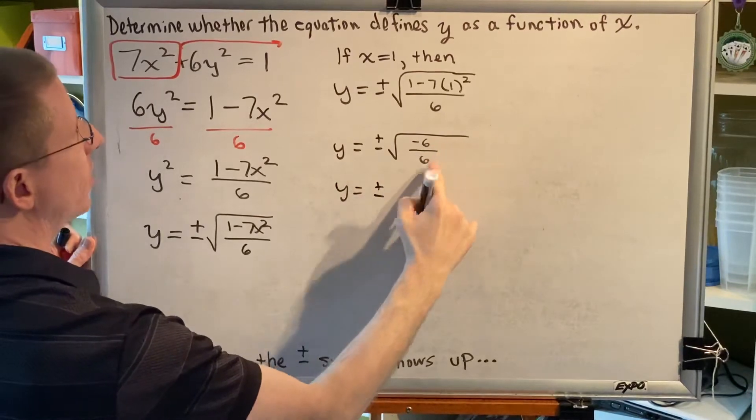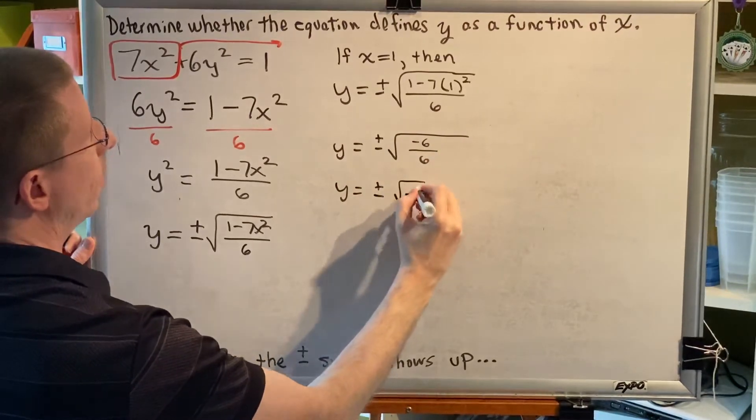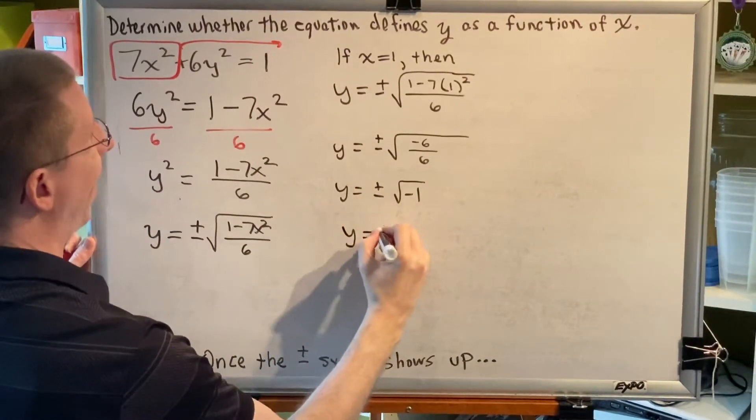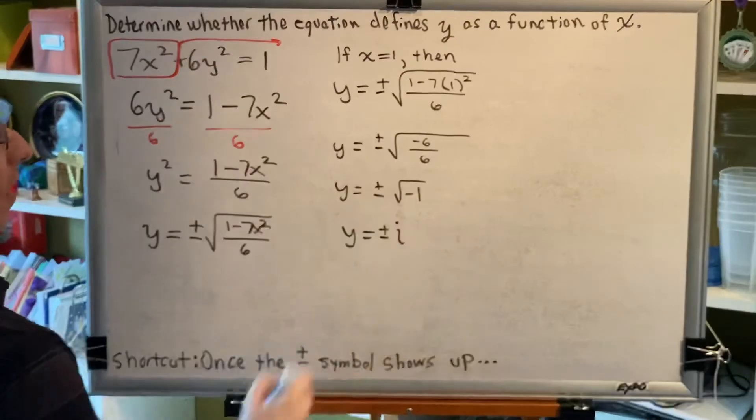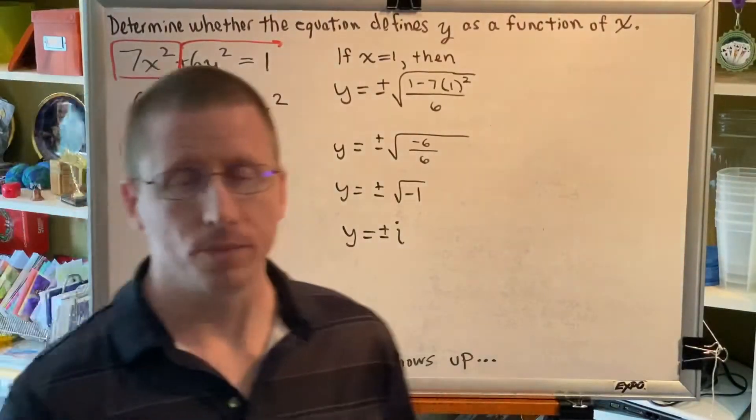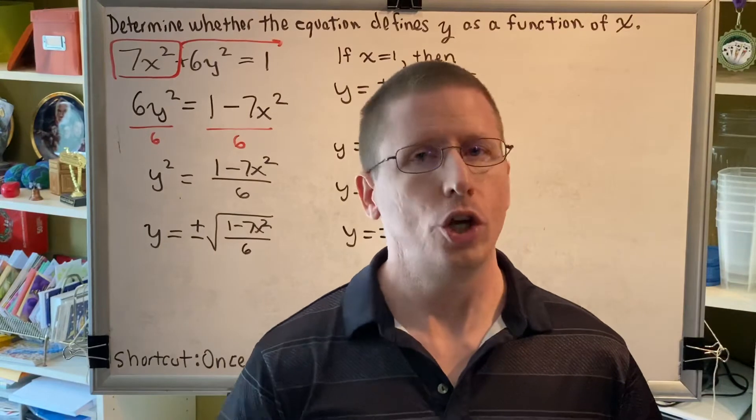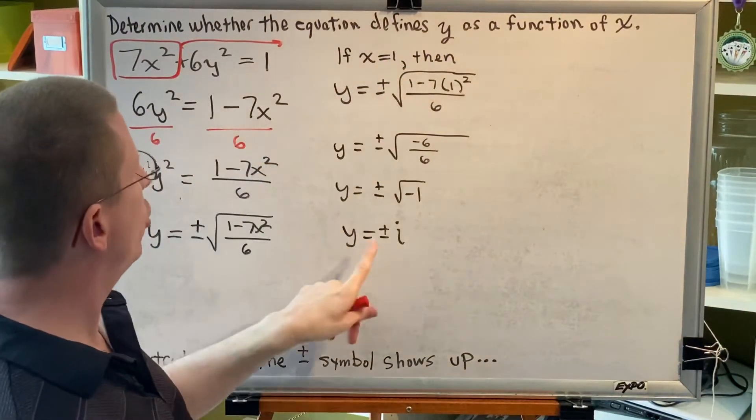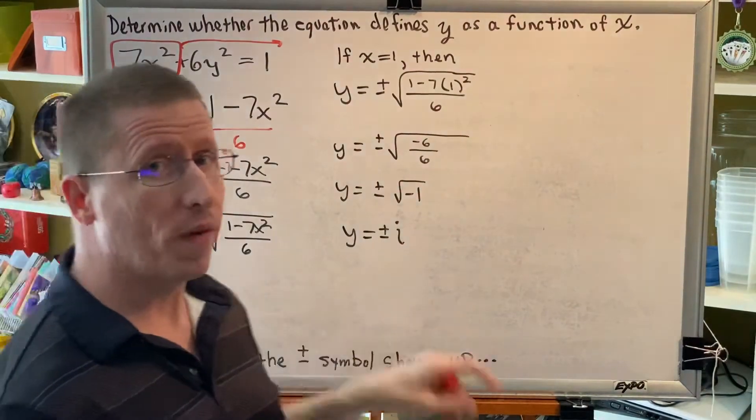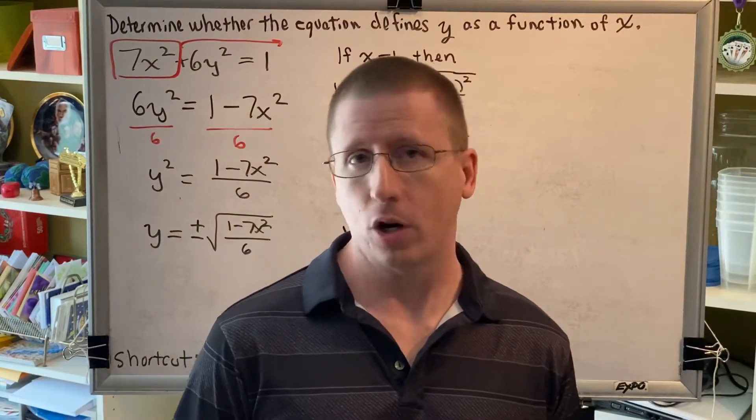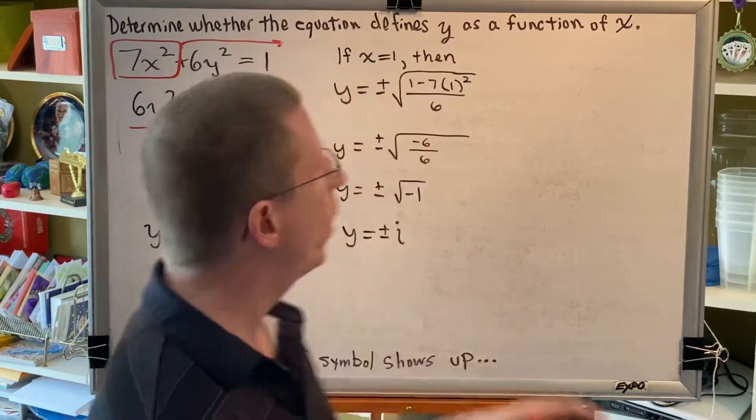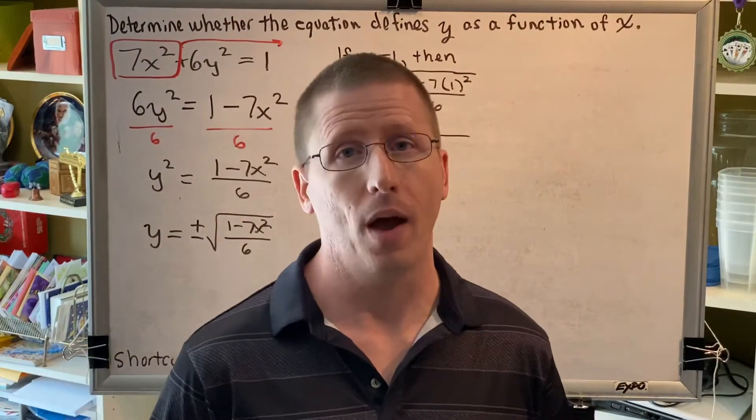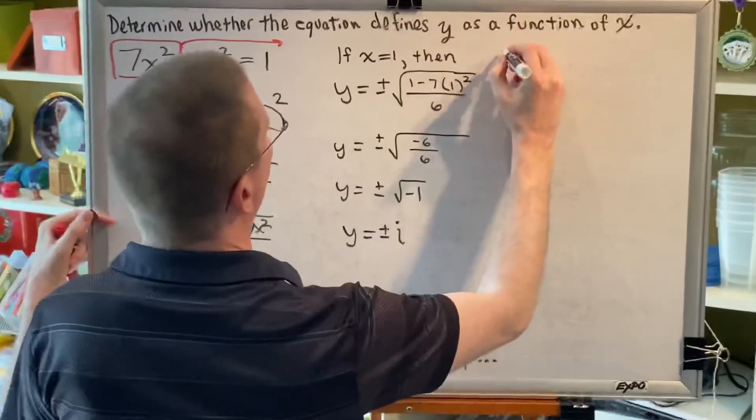Now, -6 divided by 6 is -1, and if you remember your intermediate algebra, you know that the square root of -1 is called i, which means we got an imaginary number as a result. Think about the goal you're trying to achieve: you're trying to find a real value for x that results in two or more real values for y. Were we successful in our mission? No. We had a real value for x that resulted in two imaginary values for y. So, we have to keep looking.